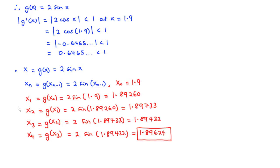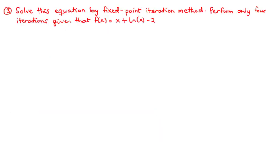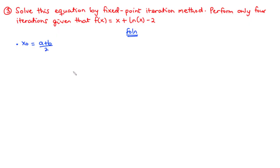Let's move on to the last example. We are going to solve this equation by fixed-point iteration method, performing only 4 iterations, given that f(x) = x + ln(x) - 2. In this example, we are not given the value of x₀, nor the closed interval, which means we first need to find the closed interval and then use the formula x₀ = (a + b)/2 to find x₀.